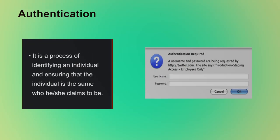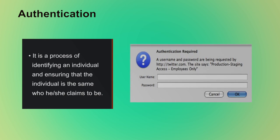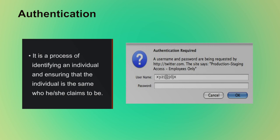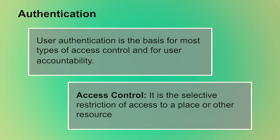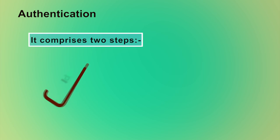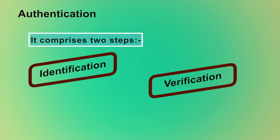What is authentication? Authentication is a process of identifying an individual and ensuring that the individual is the same person he or she claims to be. It is the process of ascertaining claimed user identity by verifying user-provided evidence. A username is required to identify who you are, and a password is required to ensure that you are the authentic user. Authentication in simple terms is positive verification of identity, either man or machine. User authentication is the fundamental building block and the primary line of defense. An authentication process mainly comprises two steps: identification step and verification step.